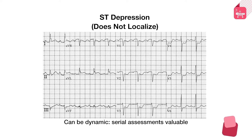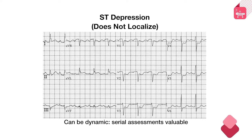Serial assessments are important because ischemia can sometimes be a transient phenomenon. If one ECG shows no ST depression and a repeat ECG half an hour later shows ST depression, that finding is quite valuable — it shows a dynamic process. Dynamic STT changes appearing and disappearing within a short time are very valuable in diagnosing ischemia.